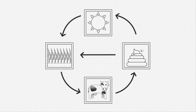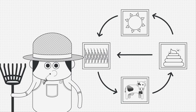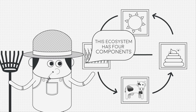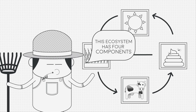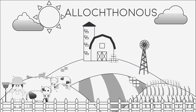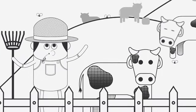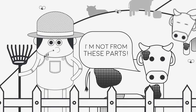In contrast to natural ecosystems, artificial ecosystems are often designed to be very simple. Artificial ecosystems may only contain a few — three or four — different components, and usually require allochthonous or external resource inputs, meaning they contain species and inputs that are not native.